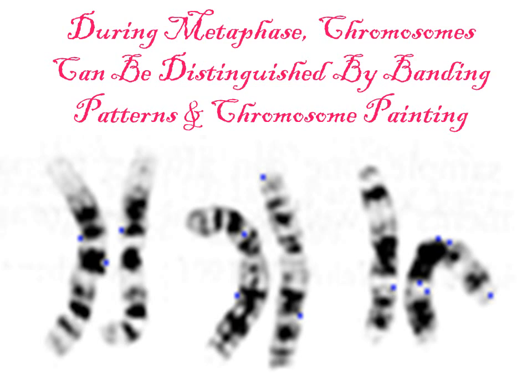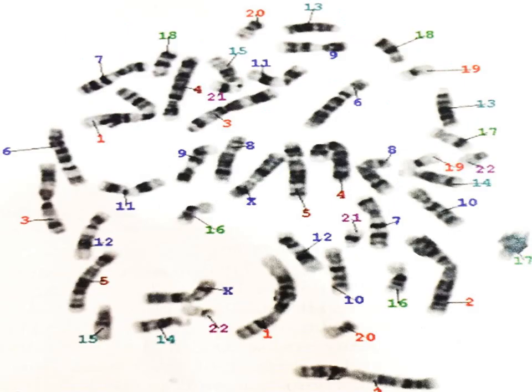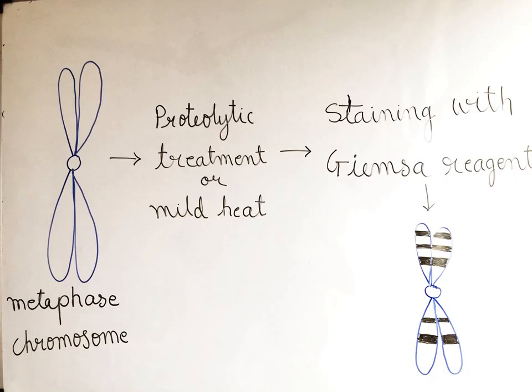Certain dyes selectively stain some regions of metaphase chromosomes more intensely than others, producing characteristic banding patterns that are specific for individual chromosomes. As seen here, these G-bands produced with Giemsa reagent are a useful marker for identifying specific chromosomes. Shown here are the chromosomes from a human male subjected to brief proteolytic treatment and then staining with Giemsa reagent — the resulting dark bands at characteristic places are distinctive for each chromosome.